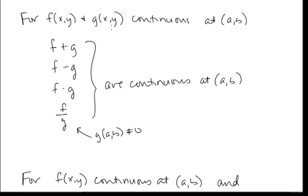For f(x, y) and g(x, y) both continuous at a point, their sum, difference, product, and quotient are also continuous at (a, b). This follows from properties of limits. Note that we require g(a, b) ≠ 0 for the quotient to exist.